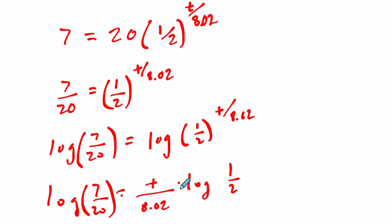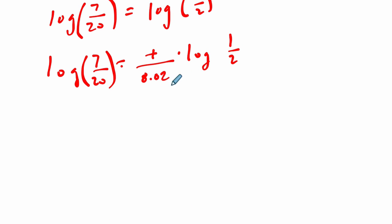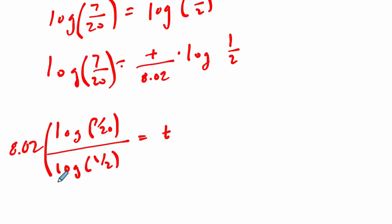T divided by 8.02 times the log of 1/2 equals the log of 7/20. We want to know what T equals. Don't be scared by all these symbols. It's just T times the log of 1/2. So we divide both sides by the log of 1/2. The log of 7/20 divided by the log of 1/2 equals T divided by 8.02. So multiply both sides by 8.02, and this is what T will equal. Notice, this is the same thing as before, and we'll get 12 days again.